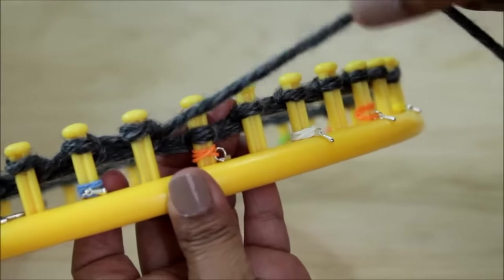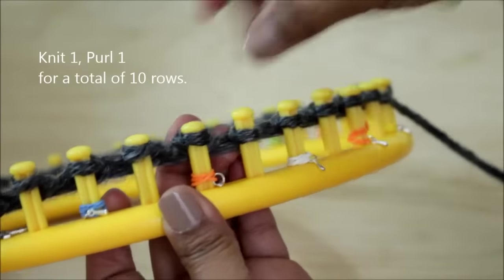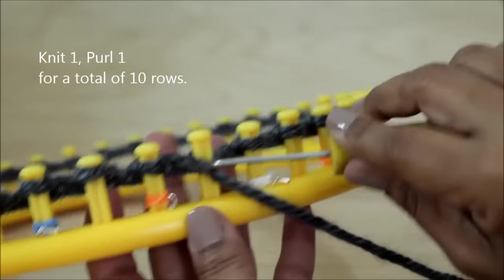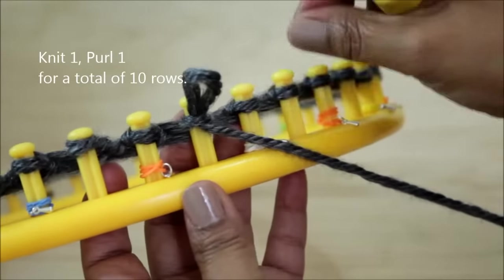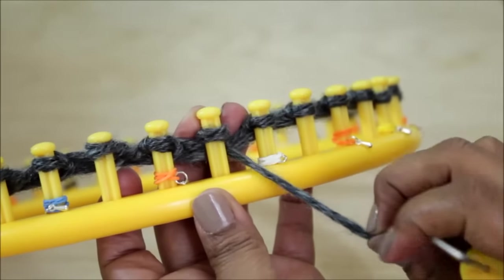All you're going to do is repeat those two stitches. You knit one and then you're going to purl one. This is called a rib stitch and what you're knitting at the moment is going to be your brim.